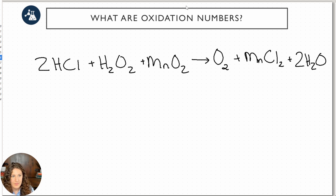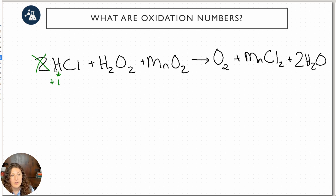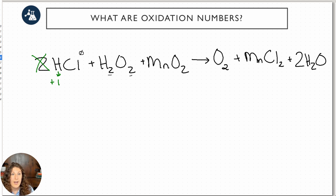Let's start assigning oxidation numbers step by step to figure out where the reducing agents and oxidizing agents are. First, hydrogen — as we know, has a plus one. Note that molar coefficients don't matter here, but subscripts do. We need to make sure our oxidation numbers add up to the overall charge of the compound. Hydrogen is plus one; chlorine, being a halogen, is minus one. Plus one and minus one add up to zero — we're good to go.